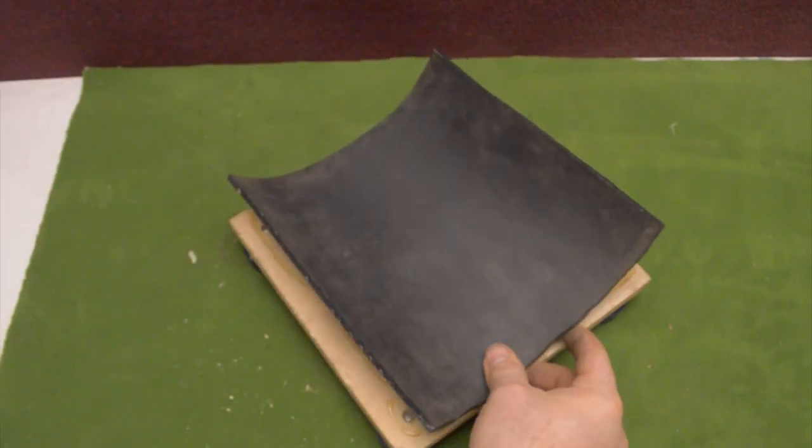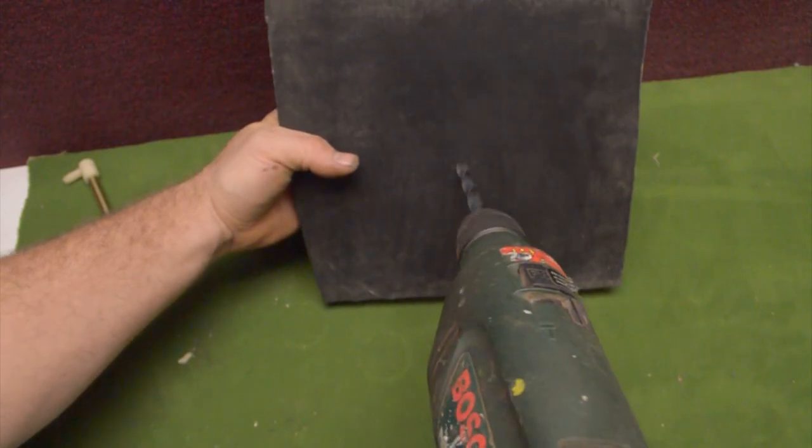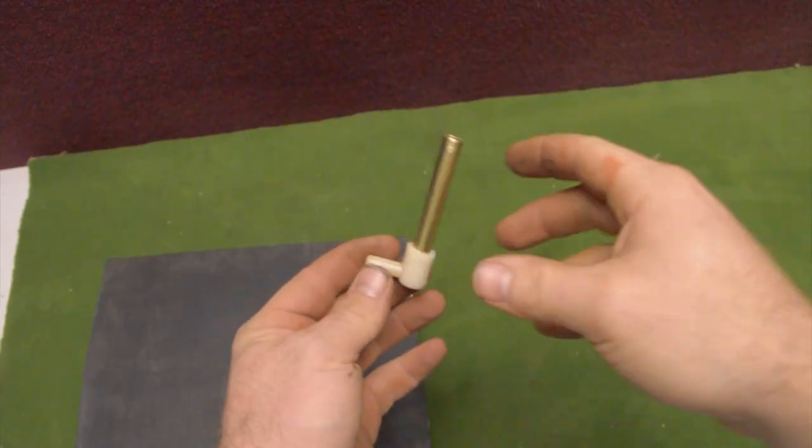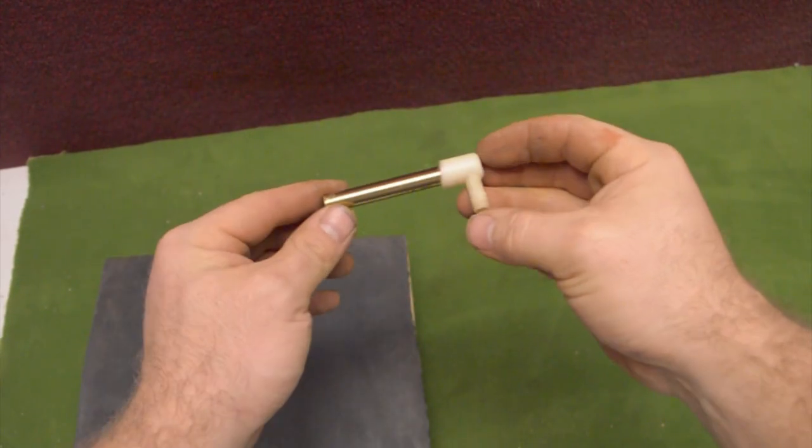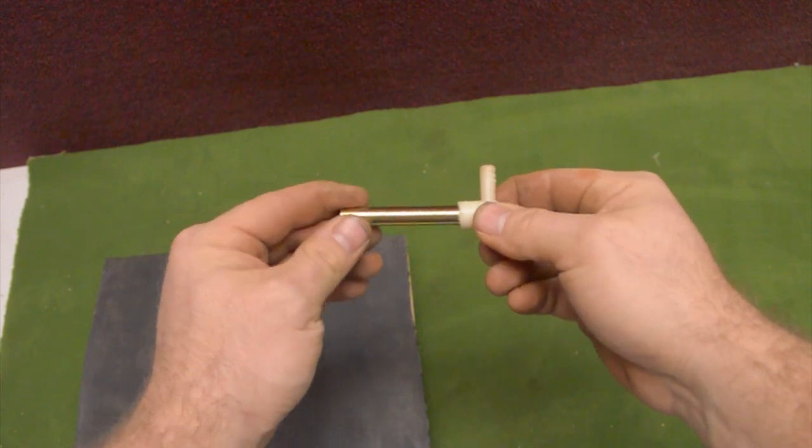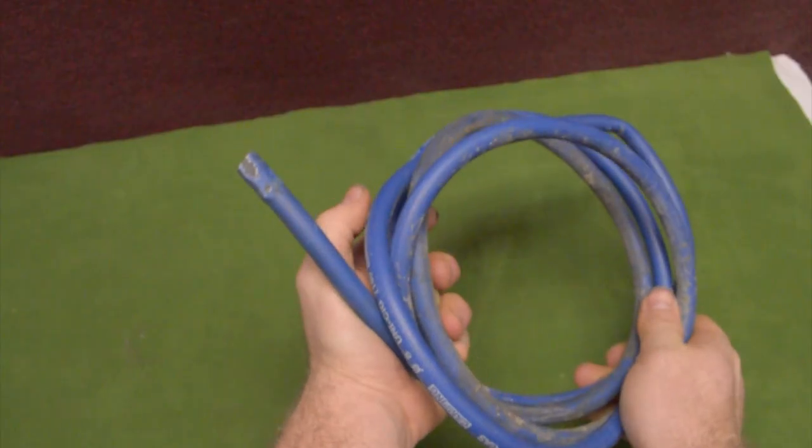Now I take a drill and drill perfectly in the center of the rubber. I take another brass connector for the tube and put it inside and glue it on the rubber.